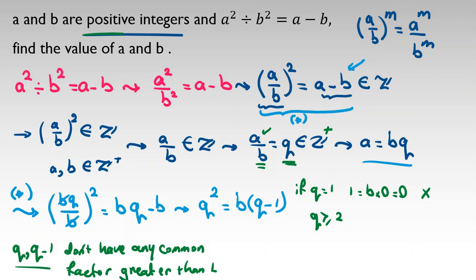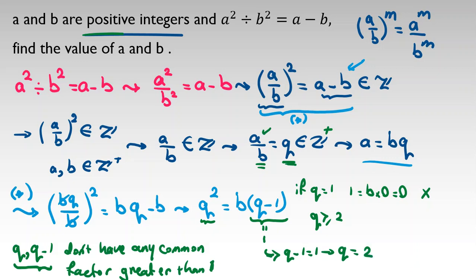So the GCD — greatest common divisor — of q and q minus 1 is 1, because they are consecutive integers. Since q and q minus 1 share no common factor, q and q squared also share no common factor with q minus 1. Therefore, q minus 1 must equal 1, because any other value (like 3) would require a shared factor with q squared, which is impossible.